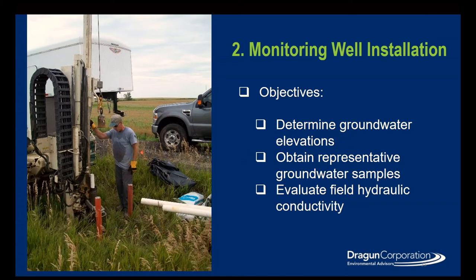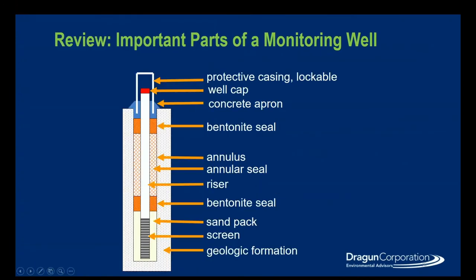Section two is going to be on monitoring well installation. The objectives are to determine groundwater elevation, obtain representative groundwater samples, and evaluate field hydraulic conductivity. This is a basic diagram of the important parts of a monitoring well. The well is comprised of a PVC or stainless steel riser pipe, and once into the water, we have a screen that allows water to get into our well for sampling. That is followed by a sand pack, which helps remove fine grains from the water. This is capped off with a bentonite seal to help prevent water from getting into our well screen.